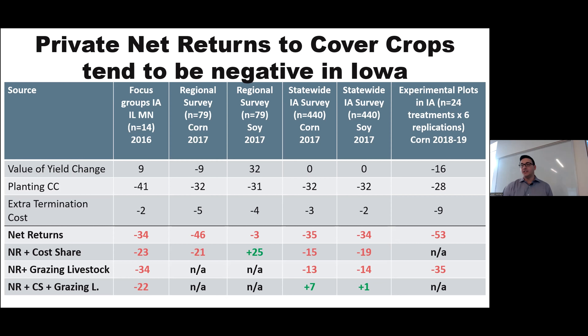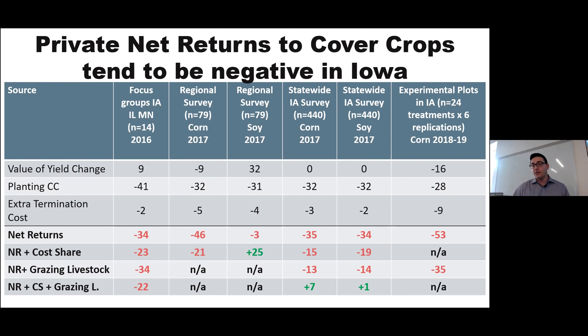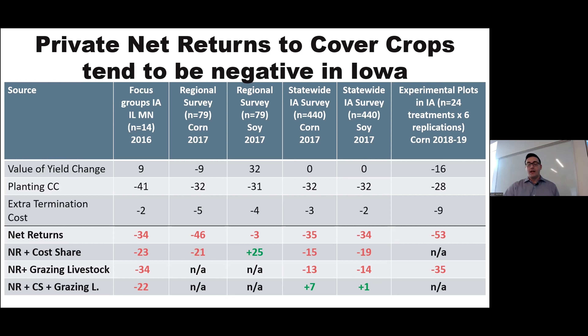Thank you to the Iowa Nutrient Research Center for inviting me. This presentation is based on research funded by the INRC. We had a great team of collaborators: Marshall among them, Wenning Sawargo now at Auburn, Wenning Zhang now at Cornell, Jim Jensen with the American Society of Farm Managers and Rural Appraisers, and Sarah Carlson with Practical Farmers of Iowa.